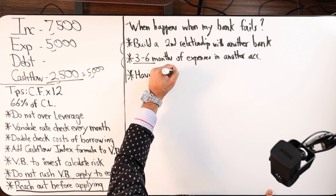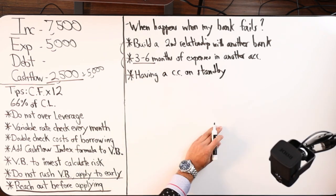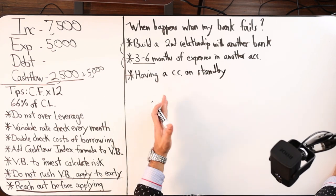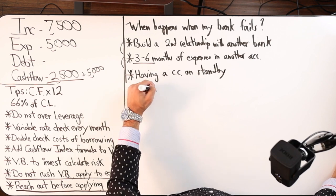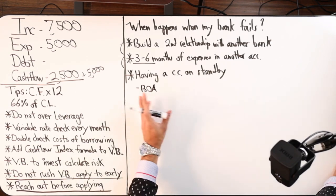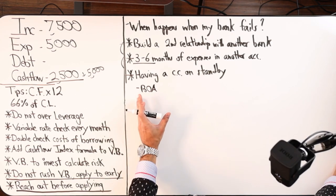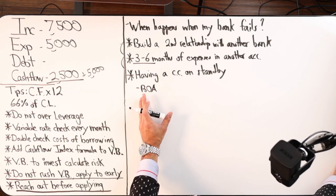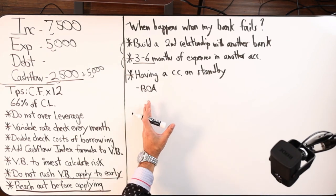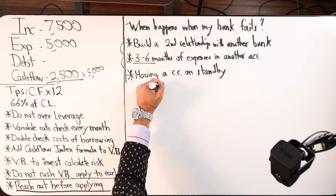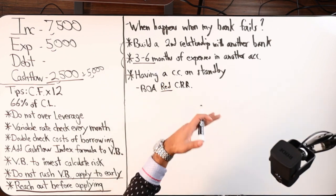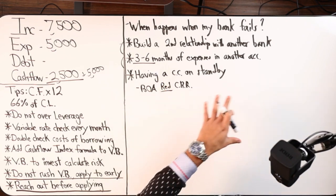Having three to six months worth of expenses can give us that cushion. Another thing would be having a credit card on standby. One of my favorite cards that I have on standby is Bank of America. This is where the big banks are very beneficial. Bank of America, as long as I've had this card—I've had this card since like 2016, 2017, one of my first cards—so I've had this card for nearly a decade. It's the Bank of America red cashback rewards card, so just look for the red one.